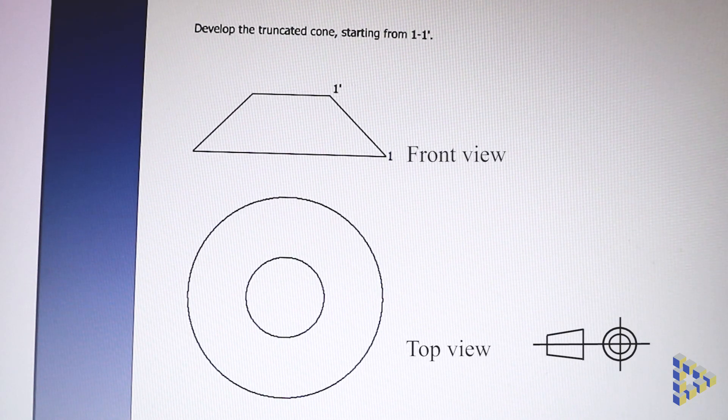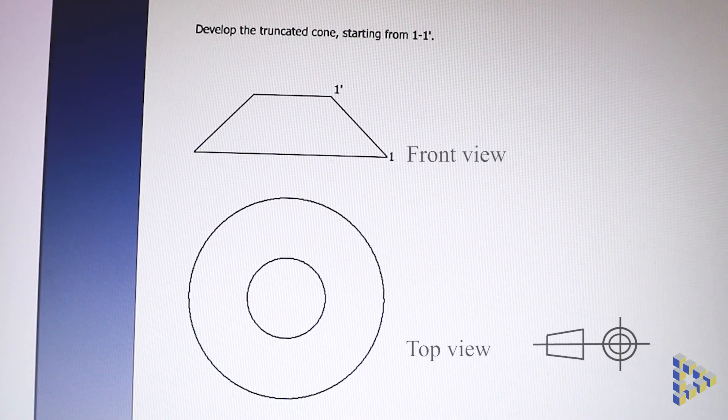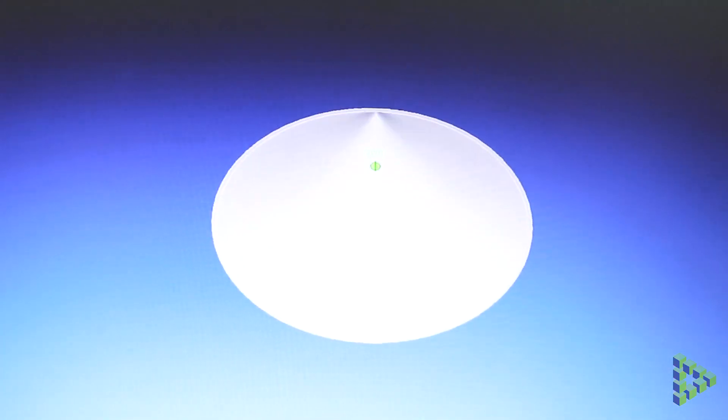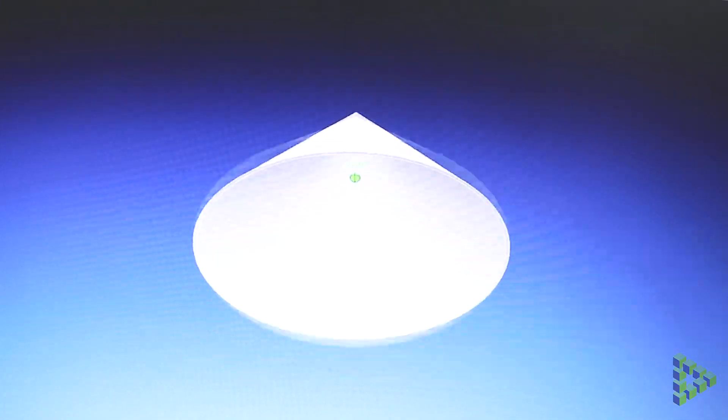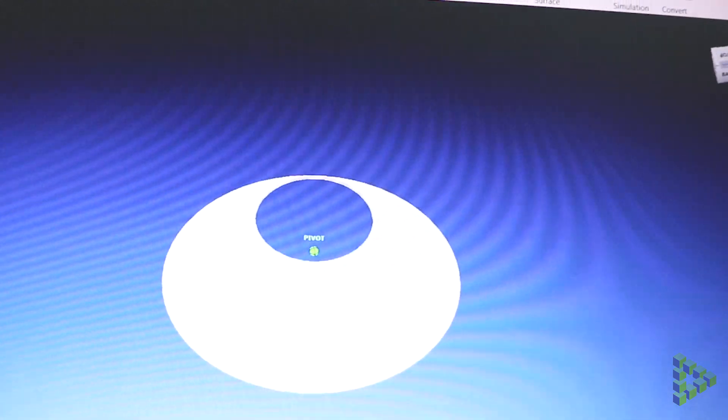Hey guys, we're given a truncated cone and asked to develop it starting from one to one dash. We can develop a right angled cone radially and will only require one true length line to take measurements from.